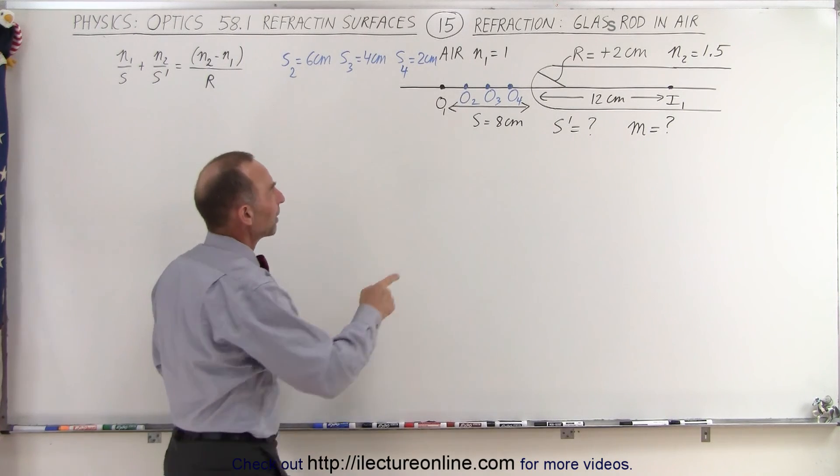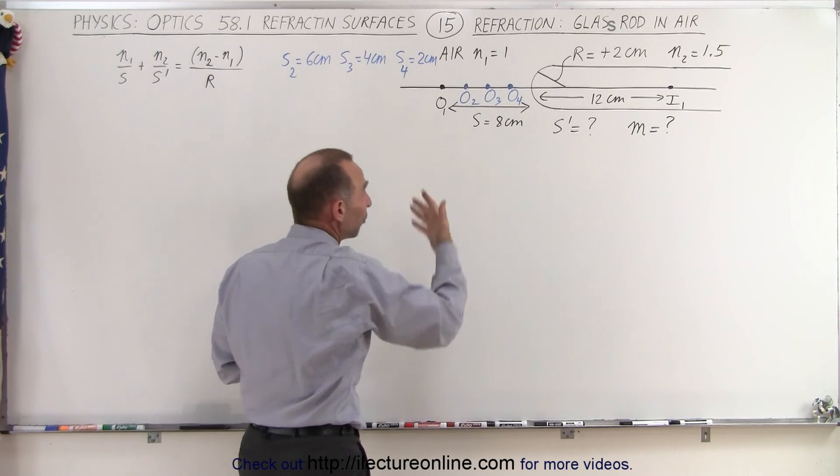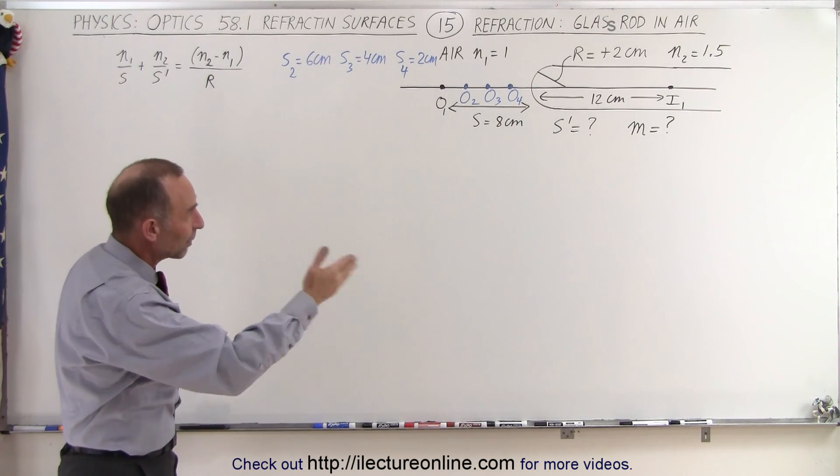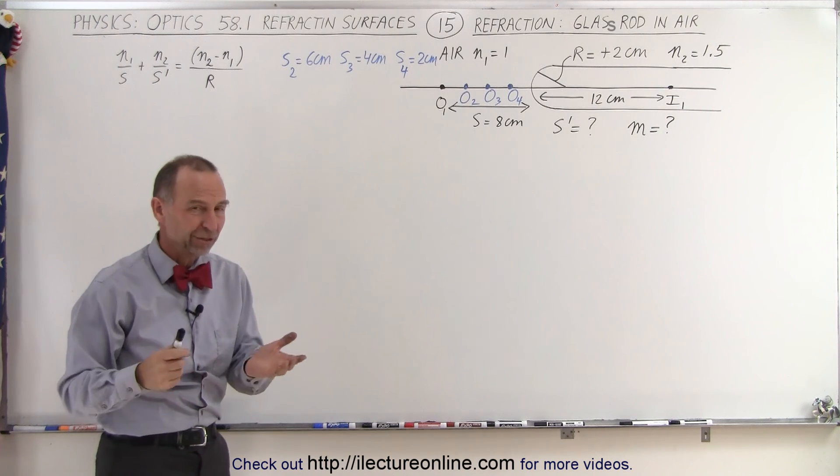Remember the magnification, when we place the object over here, was equal to negative 1. And we want to see if that was a special case, if we have different kinds of magnifications when the object is in different locations. So let's go ahead and find out.